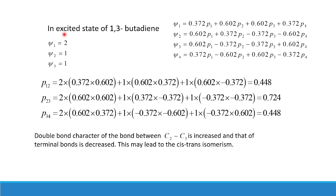Now we calculate the pi bond order in the excited state of 1,3-butadiene. In the excited state, ψ1 still has two electrons, but ψ2 has one electron and ψ3 also has one electron. For P12: 2 × (0.372 × 0.602) from ψ1, plus 1 × (0.602 × 0.372) from ψ2, plus 1 × (0.602 × −0.372) from ψ3 — this comes out to be 0.448.